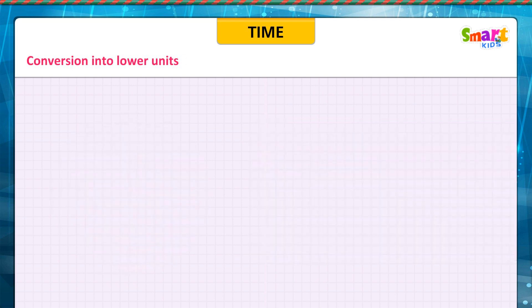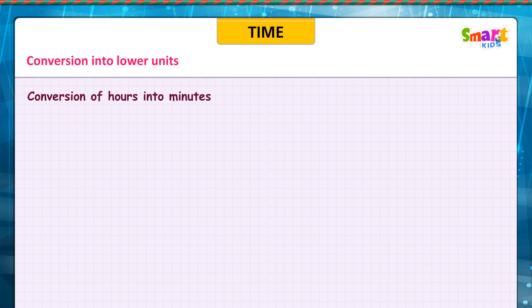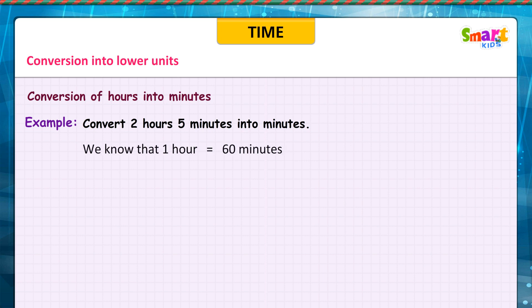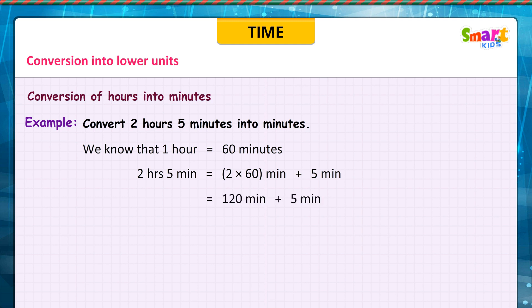Conversion into lower units. Conversion of hours into minutes. Example: convert 2 hours 5 minutes into minutes. We know that 1 hour is equal to 60 minutes. 2 hours 5 minutes is equal to 2 × 60 minutes plus 5 minutes, which is equal to 120 minutes plus 5 minutes, which is equal to 125 minutes.